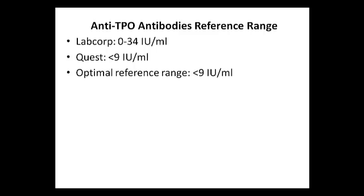For Quest Diagnostics, we want the range to be less than 9. With LabCorp, as far as an optimal range, it's hard to say. If someone has a value of 33, that's within the lab range but on the high side. If it's 20, that's well within the range. If we compare it with Quest, it would be greater than the Quest range, but as I mentioned, it's difficult to compare lab to lab, especially when it comes to antibodies.